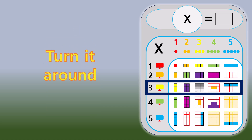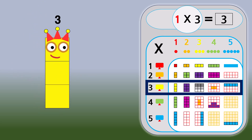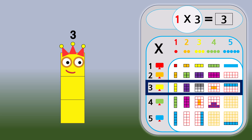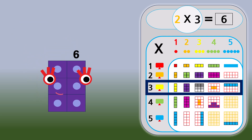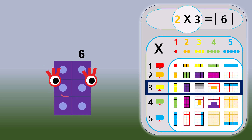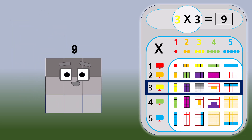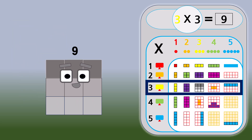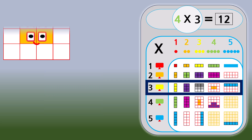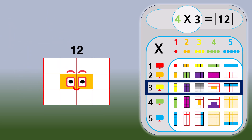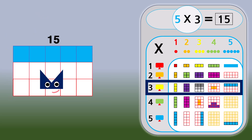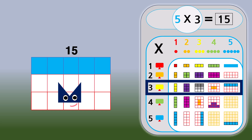Turn it around. 1 times 3 equals 3. 2 times 3 equals 6. 3 times 3 equals 9. 4 times 3 equals 12. 5 times 3 equals 15.